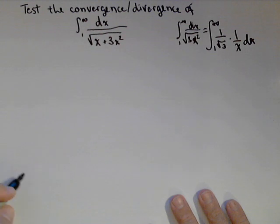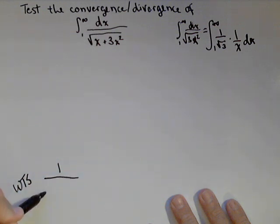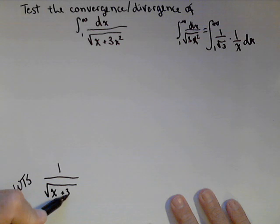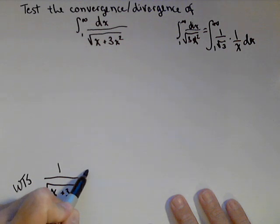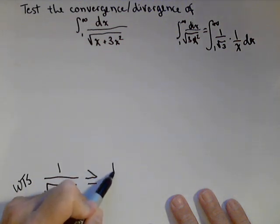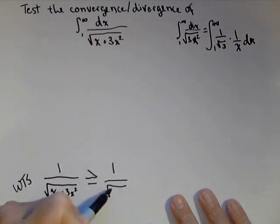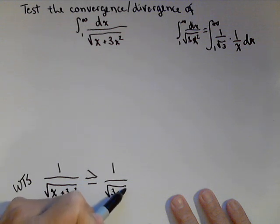So what we want to show, and what I use is WTS for want to show. Sometimes it's nice to put the end of our proof and work backwards. We would like to show one over square root of x plus three x squared. Now, we're using a divergent improper integral. We can only test for divergence, and we need to show that it's greater than one over square root of three x squared.